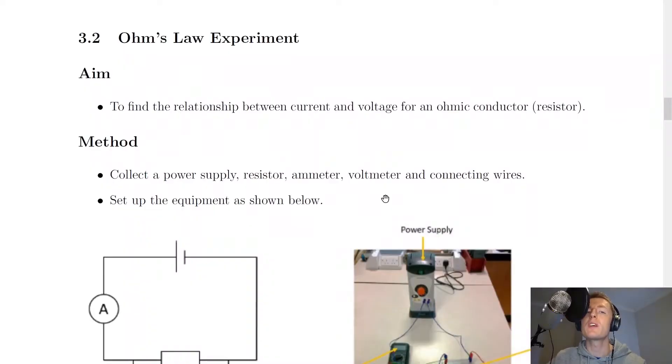Now the experiment on Ohm's Law is one of the compulsory experiments that the SQA want you to be able to describe in the exam. So we're going to go through the stages of the scientific report for the Ohm's Law experiment. Starting with the aim, the aim is to find the relationship between current and voltage for an ohmic conductor, i.e. a resistor in this case. But you could also say something like to investigate how the current affects the voltage for an ohmic conductor.